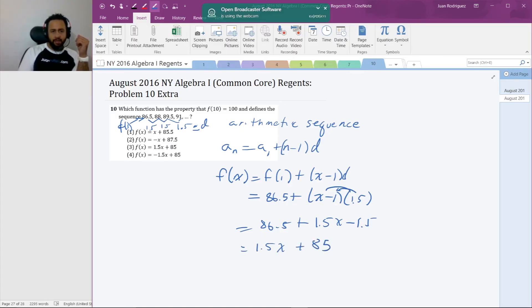And that is choice 3. You can check by plugging in any number that you choose, how about 4. Let x equals 4, we should get 91 because that's the fourth element of the list. F of 4 is equal to 1.5 times 4 plus 85, which is equal to 1.5 times 4 is 6 plus 85, equals 91, which checks our answer. So that's choice 3.